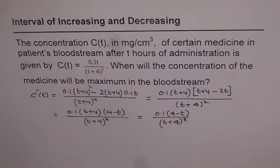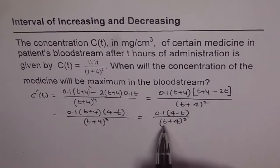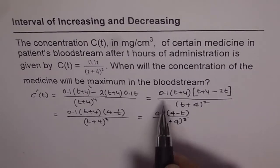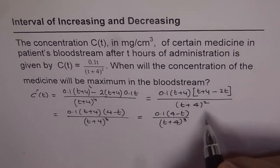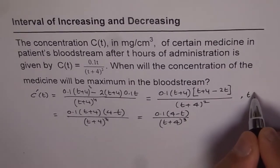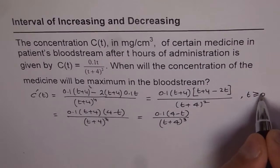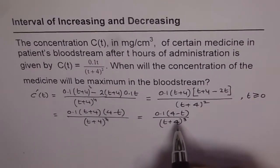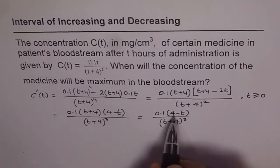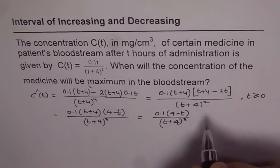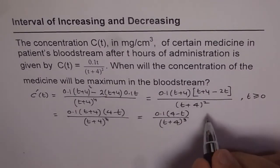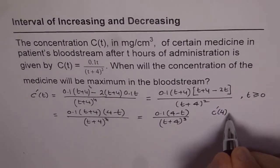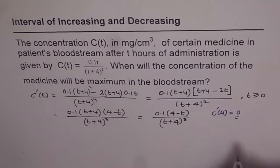Now the critical points are when T equals -4 or when 4 - T = 0. T cannot be -4 because T represents time after the medicine was administered, so T is greater than or equal to 0. The valid critical point is T = 4, where C'(4) = 0.